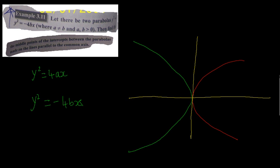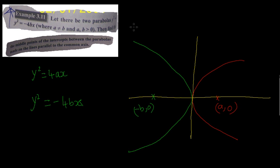The first parabola has its focus at point (a, 0). The second parabola has its focus at point (-b, 0). That's not critically important here. The important thing is to find the locus of the middle point of the intercept between the parabolas.